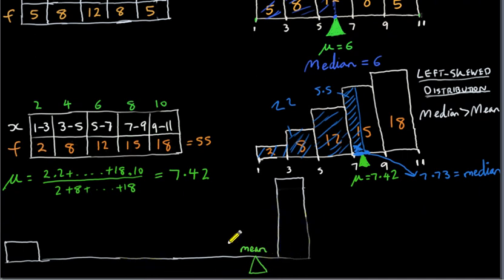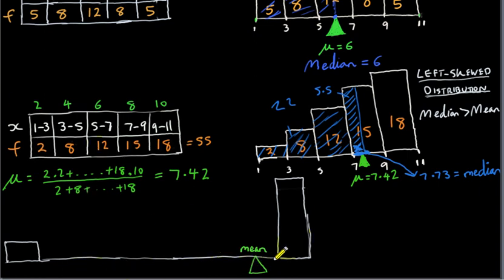To remember this result, imagine an extreme left-skewed distribution where the highest values of x have high frequency, the lowest values of x have some frequency, and all values in between have zero frequency. The balance point — the mean — will not be too far to the right, because even though the small weight on the left is far away, it has a lot of leverage. So the balance point might be somewhere in the middle. But where would the median be?